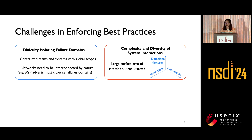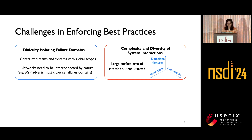The second challenge is that system interactions can be pretty complicated and diverse. Consider a three-dimensional space: the first axis being the data plane features we support, the second being the supported operations, and the third being the subsystems that automate those operations. This forms a huge surface space for potential outages.